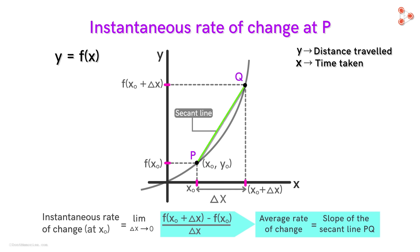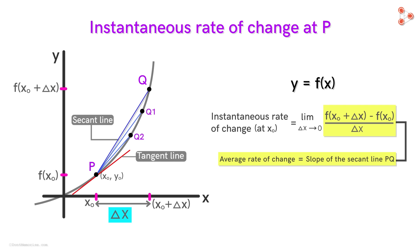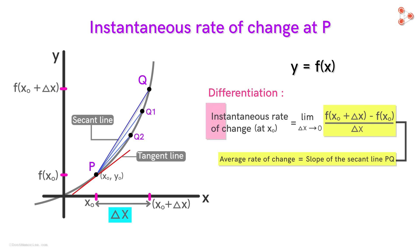What happens to the secant line as Δx tends to 0? We find the average rate of change between points P and Q₁, Q₂, and so on. As Δx tends to 0, these points come closer and closer to point P. So as the limit Δx → 0, the secant line passes through only one point P on the curve — that is, the secant line approaches the tangent line. This is how, using the process of differentiation, we find the instantaneous rate of change of a function, or the slope of a tangent line.